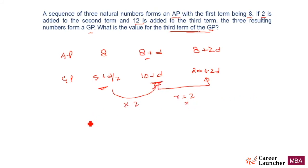...is 8. That means D by 2 should be equal to 3, or D should be equal to 6. What do we need? The third term of the GP. The third term of the GP is going to be this.